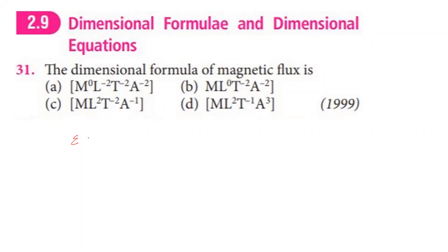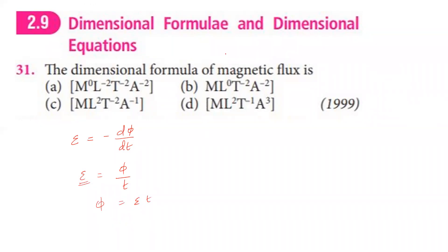Induced EMF equals the negative rate of change of magnetic flux. So EMF equals flux divided by time, meaning flux dimension equals induced EMF times time.